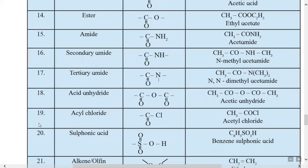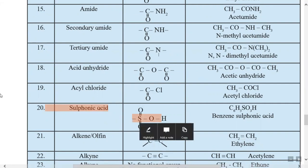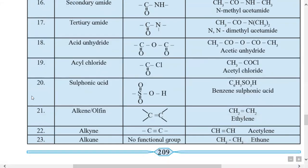The twentieth type is sulfonic acid. In the sulfonic acid functional group, sulfur is double-bonded to two oxygens and single-bonded to OH, giving -SO3H. Example: C6H5SO3H is benzene sulfonic acid.